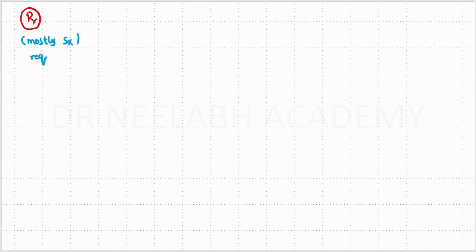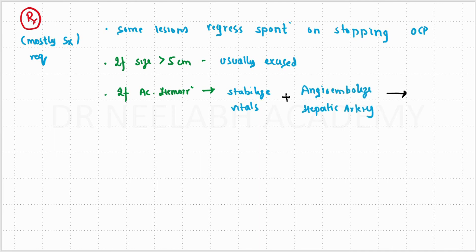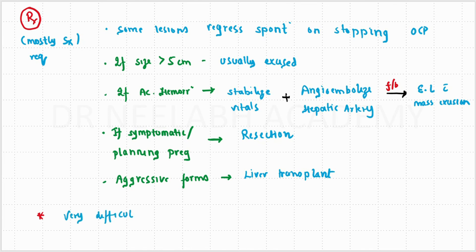Coming on to the treatment, mostly surgical treatment is required because we cannot differentiate it from hepatocellular carcinoma. Some lesions regress spontaneously on stopping oral contraceptive pills. If the size is more than 5 cm, they are usually excised. If acute hemorrhage is present, first stabilize the vitals of the patient, then we may have to angioembolize the hepatic artery followed by exploratory laparotomy and excision of the mass. If the patient is symptomatic or planning pregnancy, then resection of the lesion is required. For aggressive forms, liver transplant may be required. It is very difficult to differentiate these lesions from hepatocellular carcinoma.